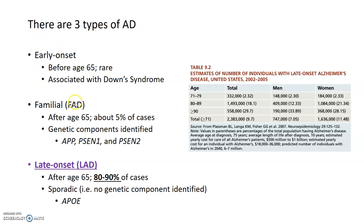The second type of Alzheimer's occurs after the age of 65, but is familial or genetic in nature. This accounts for about 5% of the cases of Alzheimer's disease that we see, and some genetic components for familial AD, or FAD, have been identified. Some mutations in these particular genes lead to the increased risk for developing Alzheimer's disease.